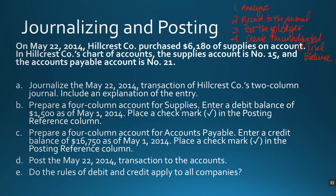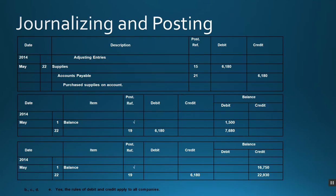Let's see if we can do that in this period of time. We are introduced to Hillcrest Company. They purchased six thousand one hundred and eighty dollars of supplies on account. They want us to journalize the May 22nd transaction to the journal. So we analyze the transactions, then record to the journal, post it to the ledger — though here we don't have enough information to create the unadjusted trial balance, but we'll get to that shortly.